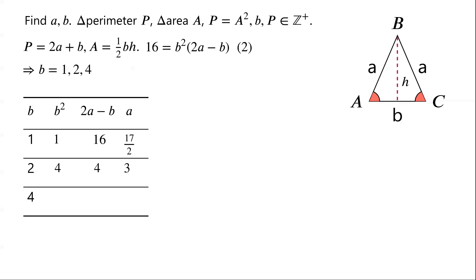For B equals 4, B squared is 16. 2A minus B equals 1. So A equals 1 plus 4 over 2, which is 5 over 2.